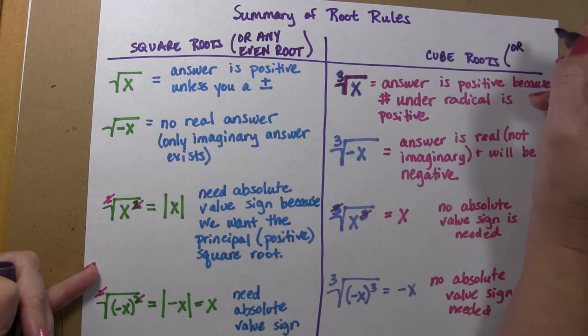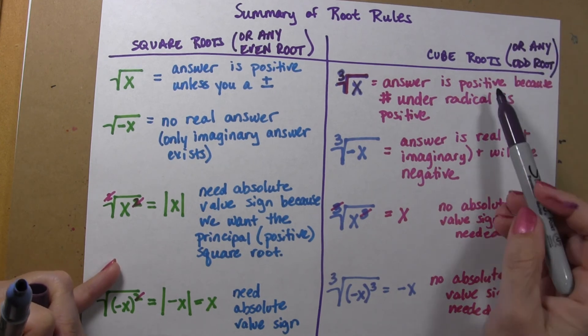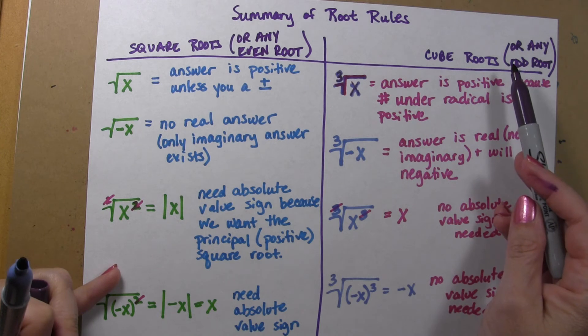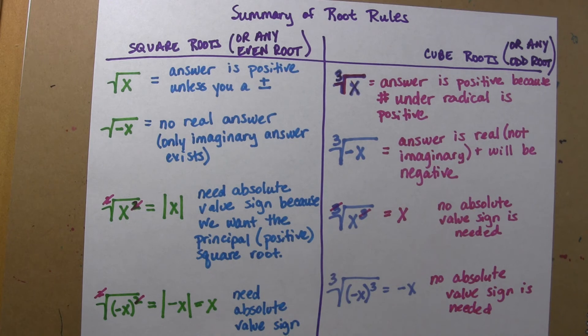Cube roots, these are the rules for any odd root. So, third root, fifth root, ninth root, 111th root, right? Anytime you're taking an odd root, you would follow these rules.